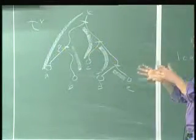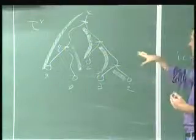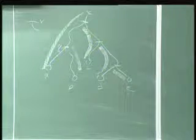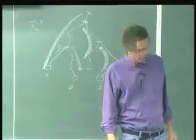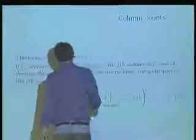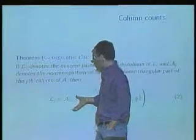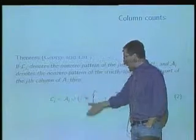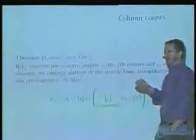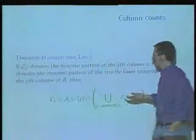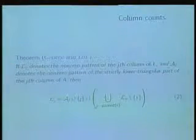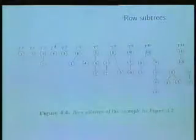We could compute both row and column counts if we wanted. Now let's look at column counts. The non-zero pattern of a column in the matrix is the union of several things: the original entries in that column, J itself (the diagonal entry), and all your children. Every column in the tree is the union of its children.